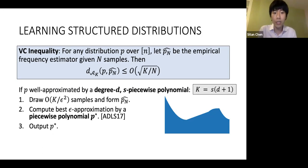Now imagine p is well approximated by a degree d s-piece polynomial. They give a more sophisticated algorithm for step two that allows you to round the empirical estimator to the best piecewise polynomial approximation. This general recipe then allows you to learn structured distributions under this definition in L1 using very few samples.